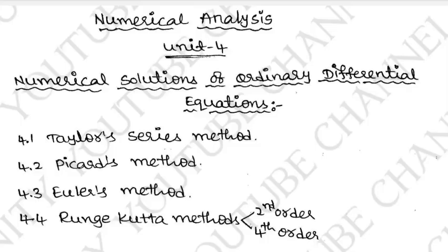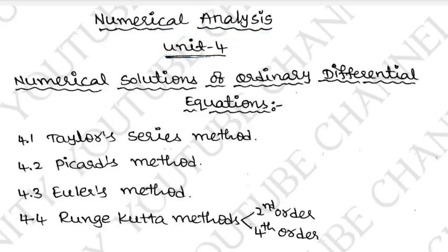Hi there everyone, welcome to VSP Unity Numerical Analysis M6 Unit 4. We have a few methods — just 5 methods: Taylor series, Picard's method, Euler's method, Runge-Kutta second and fourth order method. We have a long question to discuss.